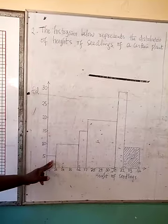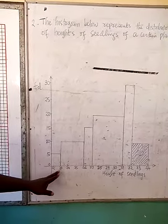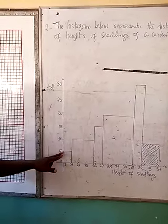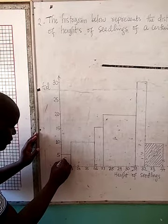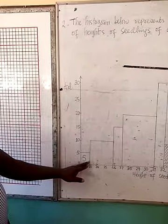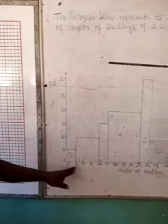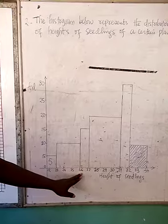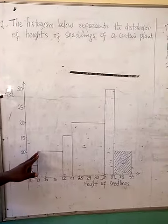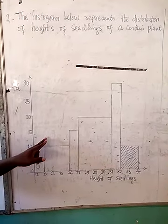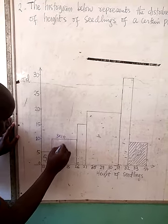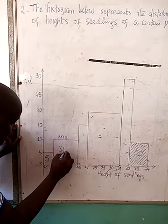Some of this is mental work. The bar from 22 to 23 has a width of 1 and a height of 5, so the area of that rectangle is 5, meaning we have 5 seedlings in that class. The next bar, from 23 to 26, has a width of 3 and a height of 10. Three times 10 is 30, so we have 30 seedlings there.